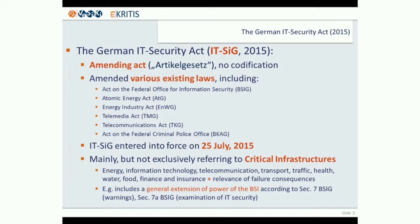For this reason, the German parliament decided to develop the so-called IT Security Act of Germany, and it came into force in 2015. This has been a so-called Artikelgesetz — an omnibus law. It was only an amending act. Even though it is called the IT Security Law of Germany, this is no codification concerning IT security in Germany. It just amended various existing laws, including the Act on the Federal Office for Information Security, the Atomic Energy Act, the Energy Industry Act, the Telemedia Act, the Telecommunication Act, and the Act on the Federal Criminal Police Office. This law came into force in 2015 and is mainly, but not only, focused on the protection of critical infrastructure.